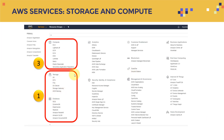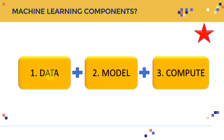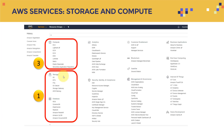For storage, which represents the data component, AWS offers Amazon S3 — we're going to have an entire lecture on S3 — as well as Storage Gateway and S3 Glacier. There are also tons of database services such as RDS, DynamoDB, and Amazon Redshift, and we're going to cover those coming up as well.